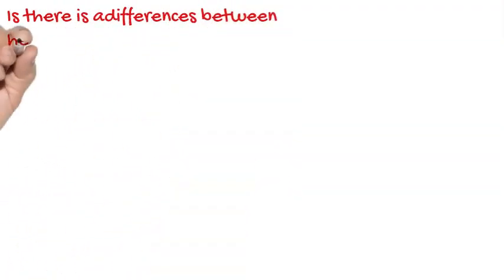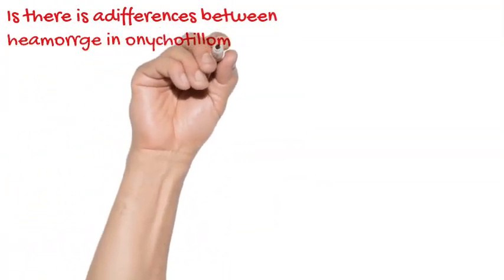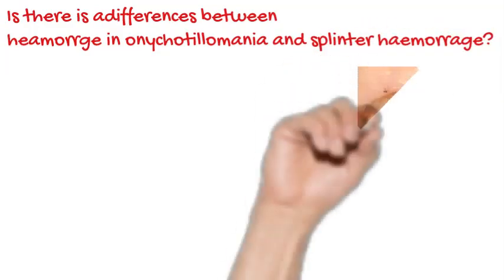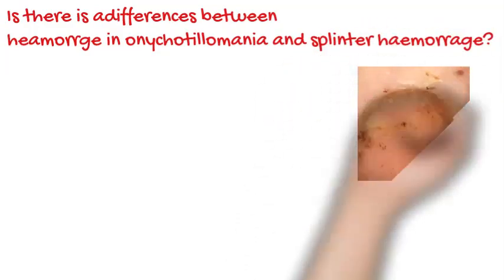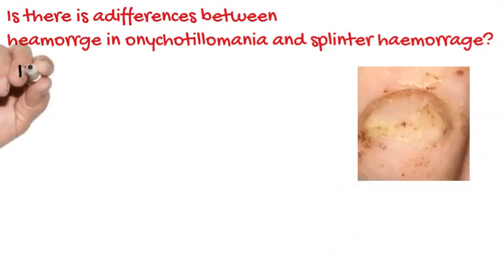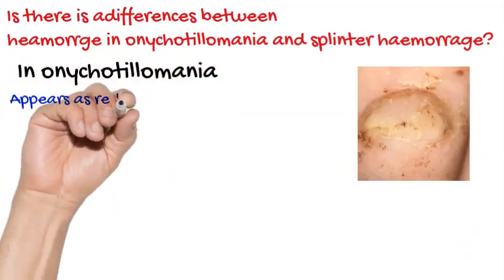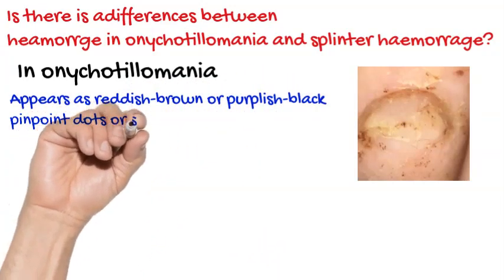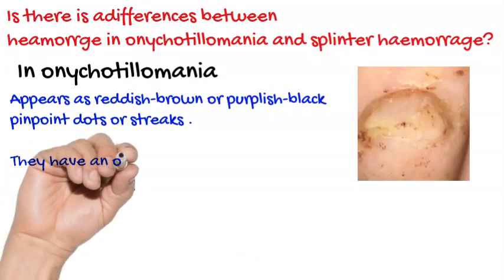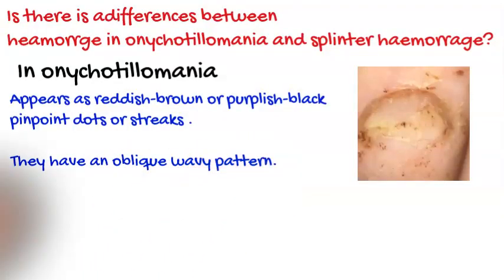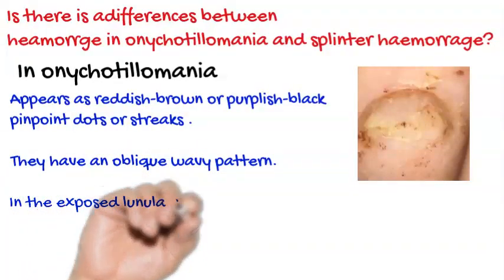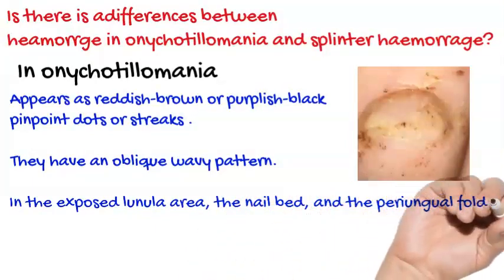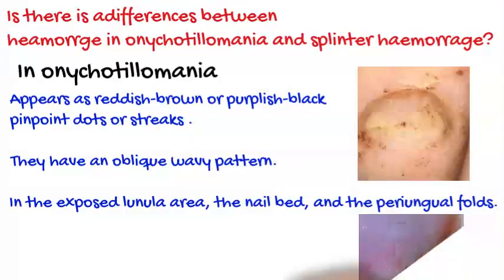There is a difference between hemorrhage in onychotillomania and splinter hemorrhage. In onychotillomania, hemorrhage appears as red, brown, or purplish-black pinpoint dots or streaks with a certain pattern — located in the exposed lunular area, the nail bed, and the periungual fold.